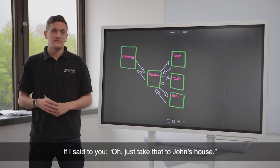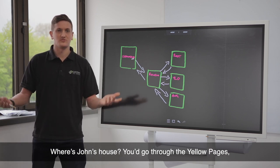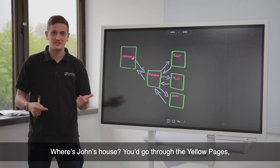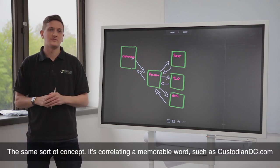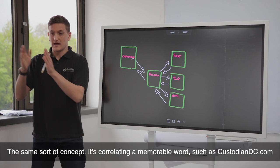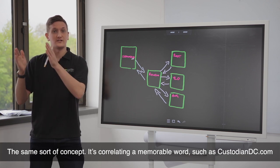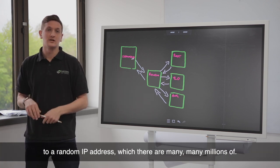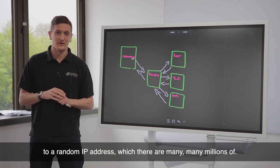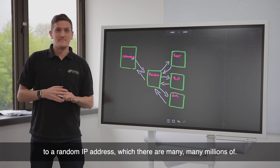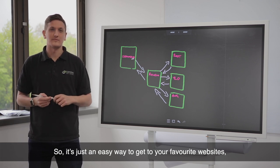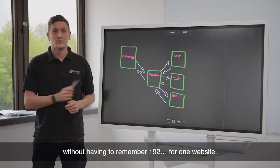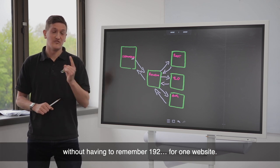Think of it as yellow pages for the internet. If I said to you, just take that to John's house, where's John's house? You'd go through yellow pages. Oh look, there's John, there's his address. Same sort of concept. It's correlating a memorable word, such as custodiandc.com, to a random IP address, of which there are many millions. It's just an easy way to get your favorite websites without having to remember 192.168.1.1 for one website.